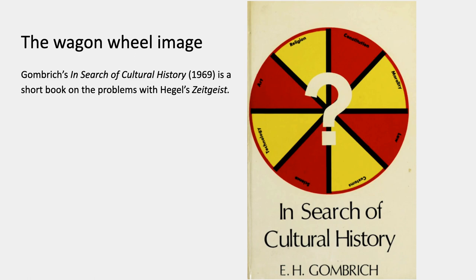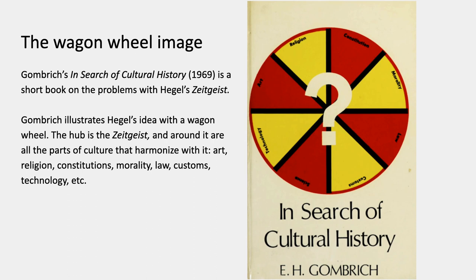Gombrich also wrote this large pamphlet or thin book, In Search of Cultural History, which is all about problems with Hegel's zeitgeist — with the synchronic aspect of his theory. Gombrich illustrates Hegel's idea that all the parts of culture are connected with the metaphor of a wagon wheel. On the cover of his book you see that here — it's meant to be an old-fashioned wagon wheel, and the hub, which has a question mark, is the zeitgeist, the spirit of the age. Around it are all the parts of culture that harmonize with it: art, religion, constitutions, morality, law, customs, technology and so on.